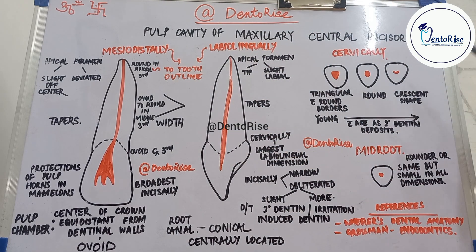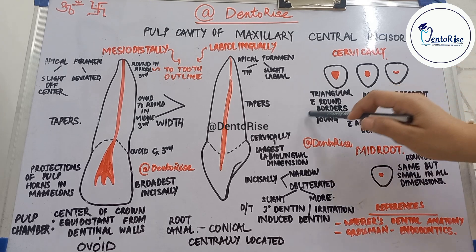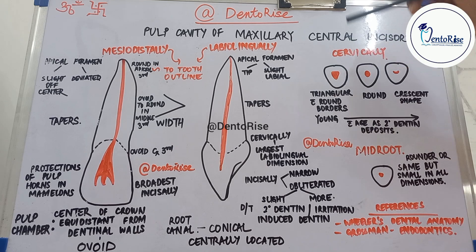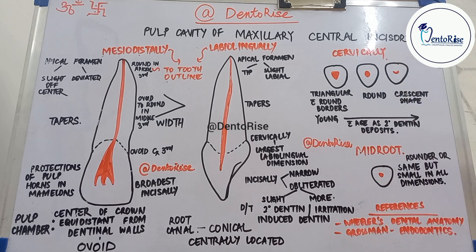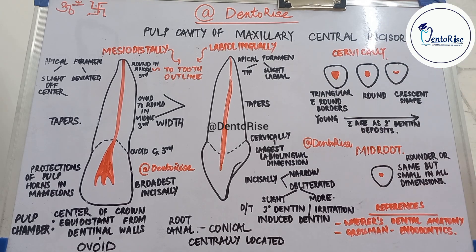Discussing the pulp cavity cervically: when the patient is young, the pulp chamber is roughly triangular in outline, with the base of the triangle at the labial aspect and relatively rounded borders. As age increases, secondary dentine is deposited and the pulp chamber changes from a triangular shape to a round shape, and eventually to a crescent shape.